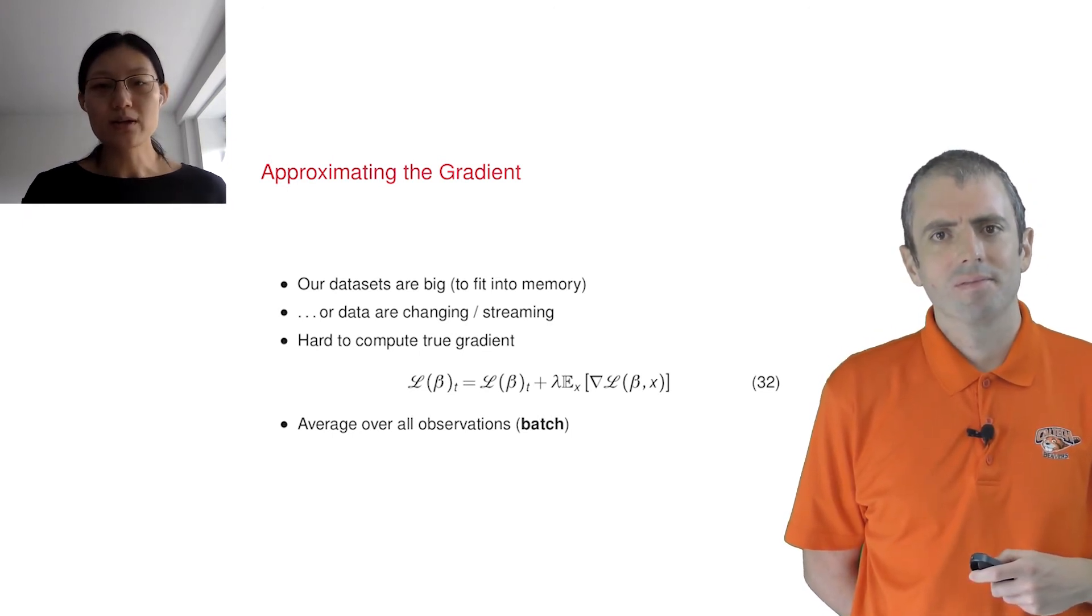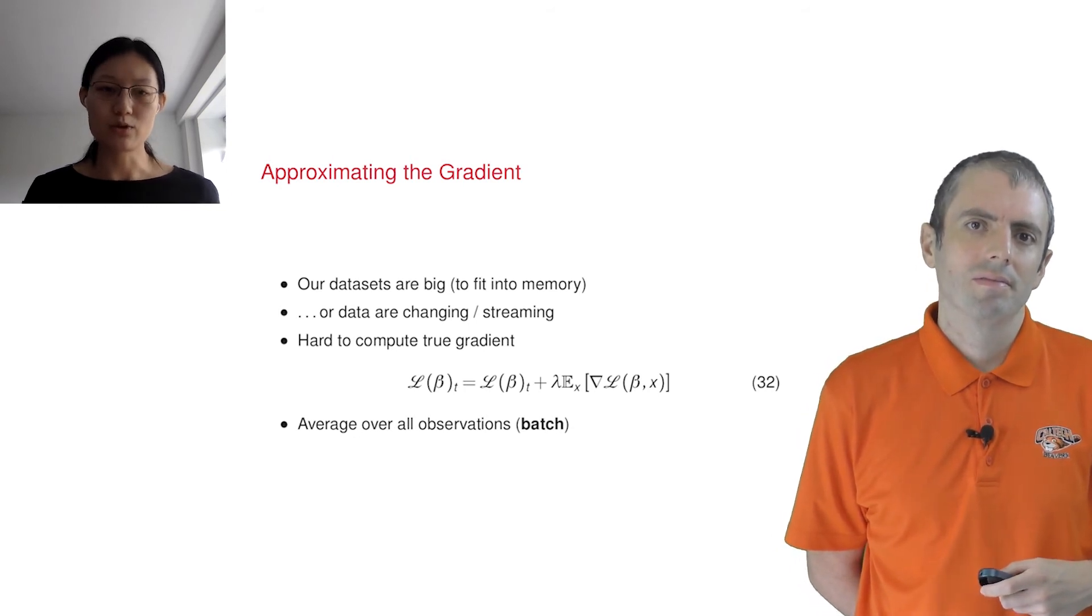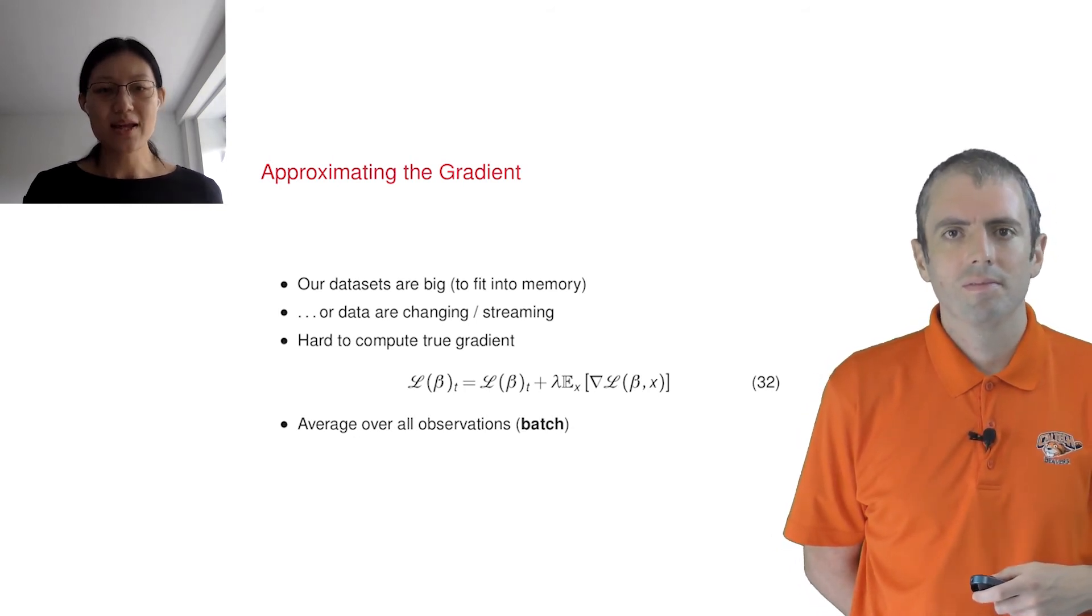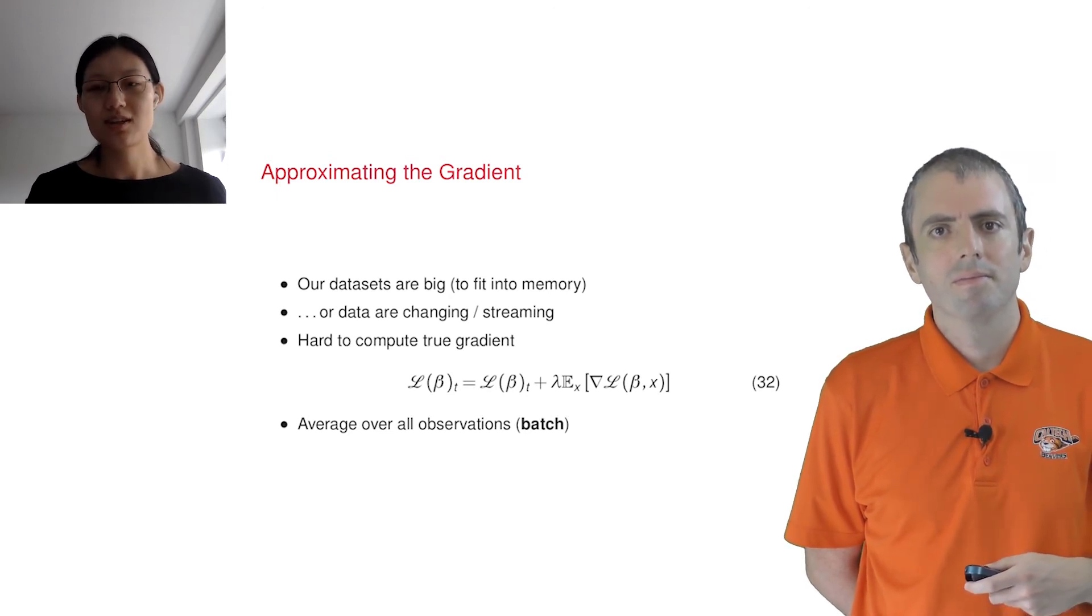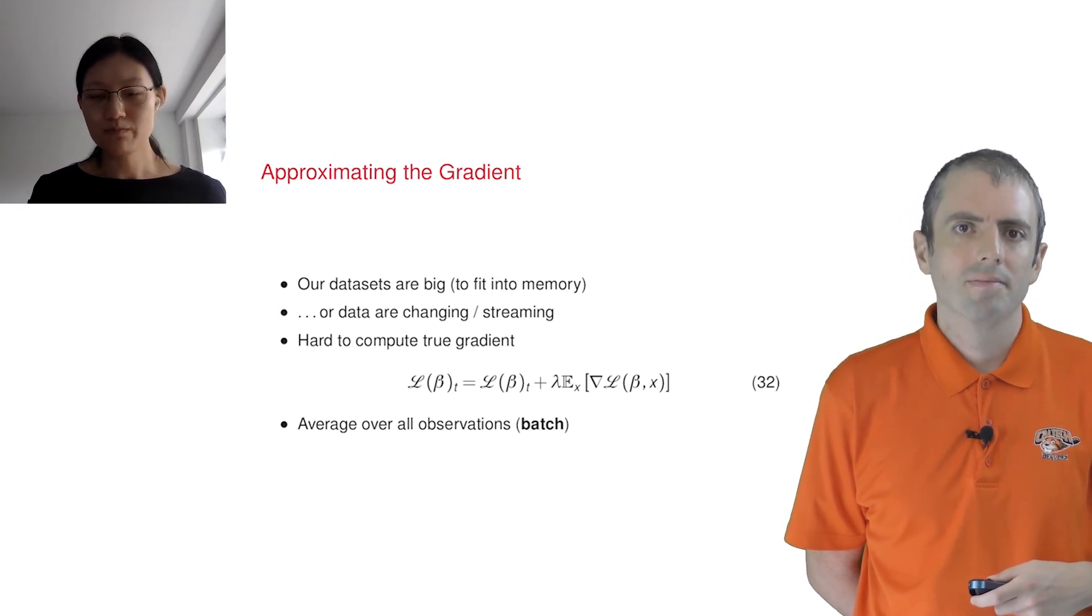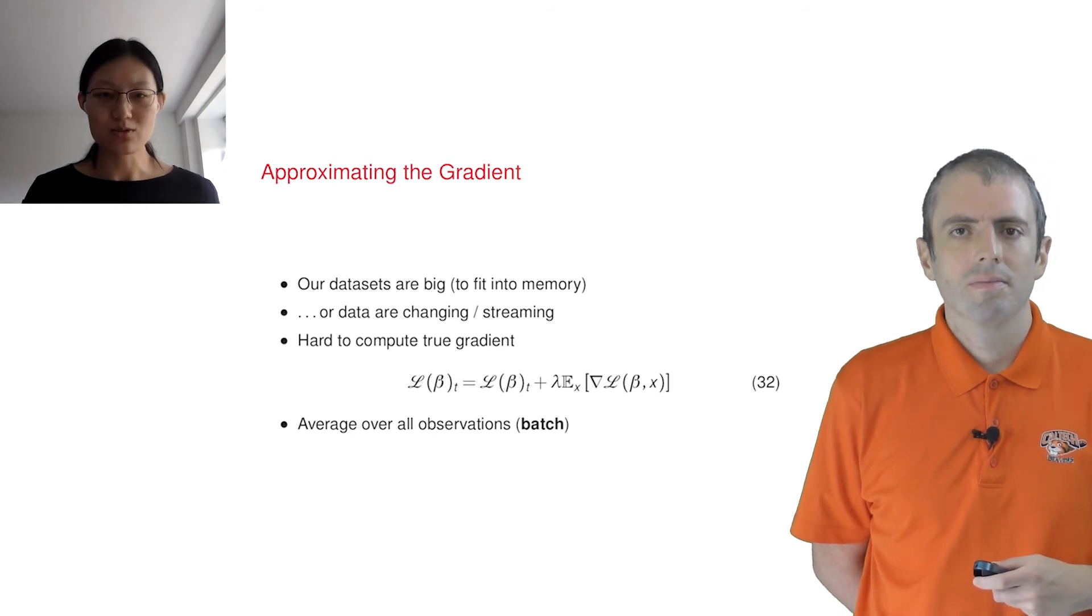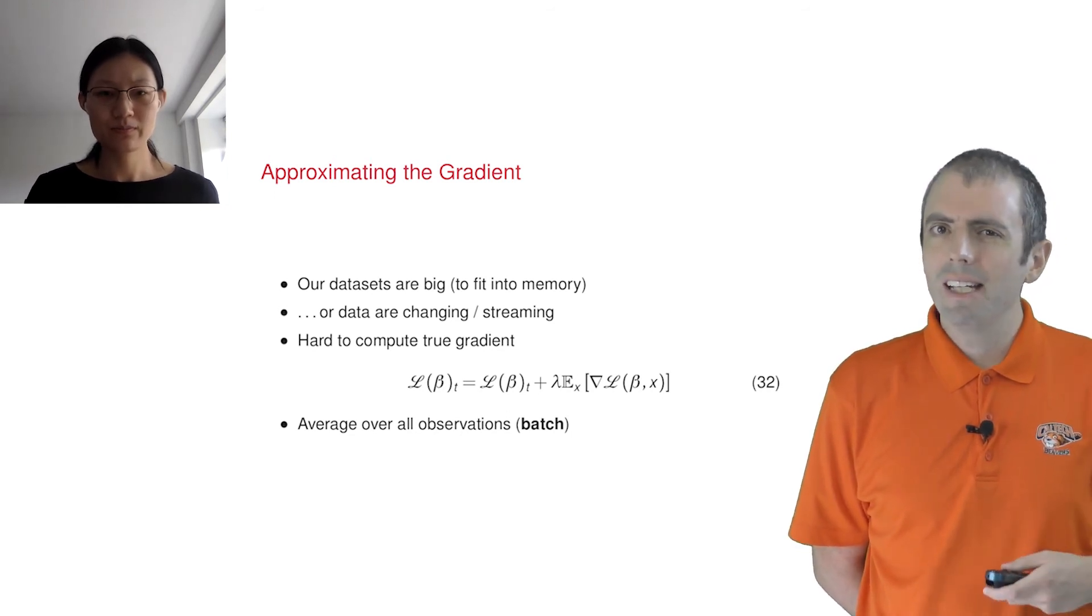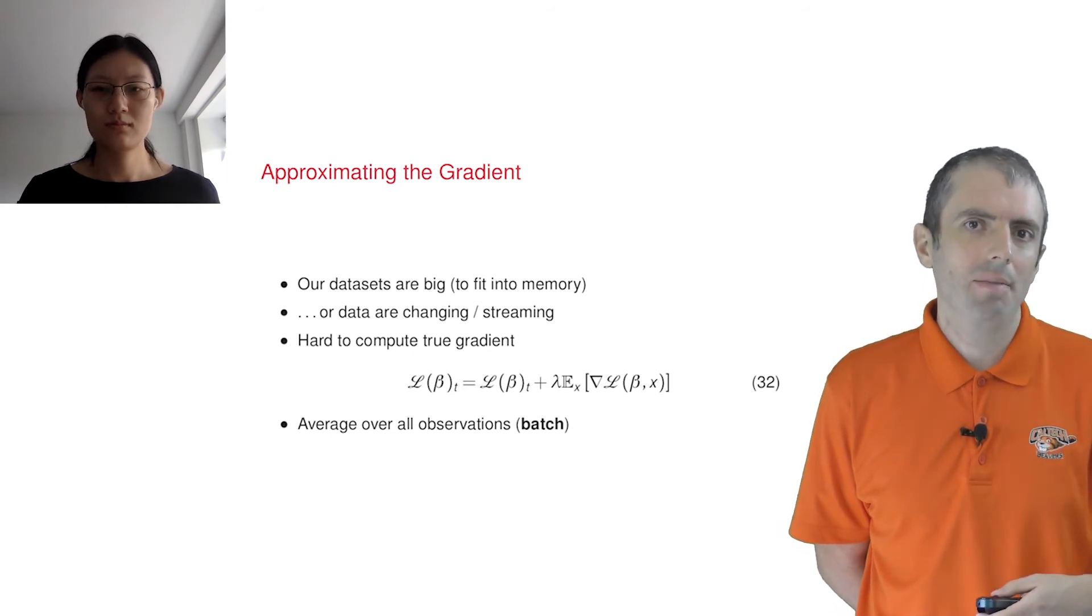You've written the update with this funny looking E here. What's going on? Well, another way of thinking about a gradient is that it's an expectation over some distribution. So the E stands for expectation. While Google has a bunch of emails, it doesn't have every email in the world. It's just a sample from the distribution. So any gradient is really going to approximate the distribution.